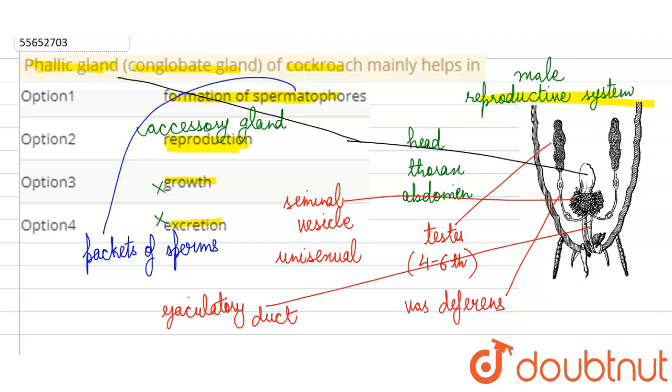The phallic gland or conglomerate gland that we can see here produces secretions that help form the spermatophores. So option A will be our correct answer. Option B, reproduction, is also correct, but it doesn't explain which specific part of the reproduction process. The more specific option A states that the phallic gland of male cockroach mainly helps in the formation of spermatophores.